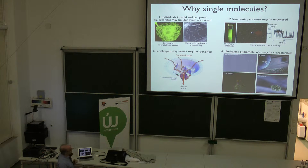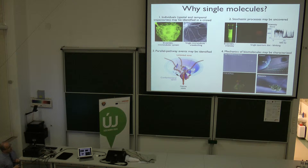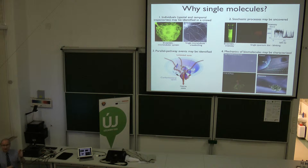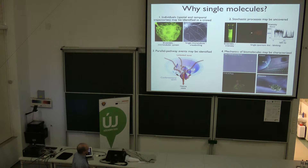We can also uncover stochastic processes. For example, the blinking of fluorophores. In bulk solution we see steady GFP fluorescence in the cuvette, but this is GFP fluorescence of a single molecule, and you can see that it turns on and off. It's a stochastic process - you cannot predict when the switching on and off will occur.